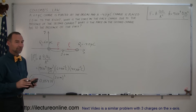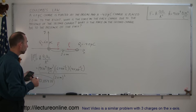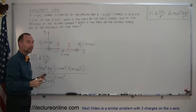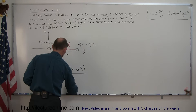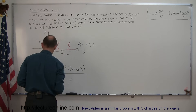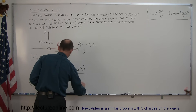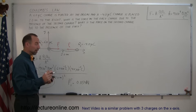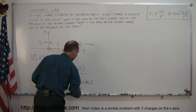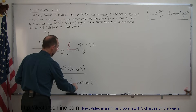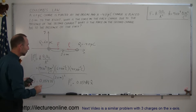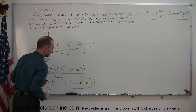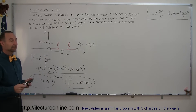That's just the magnitude; now we find the direction and write the answer in vector format. The force on Q1 is directed to the right, which is the positive x direction. So the vector quantity of F1 is equal to positive 0.054 Newtons in the x direction, written with the unit directional vector x-hat. That's the answer in vector format: 0.054 Newtons in the positive x direction.